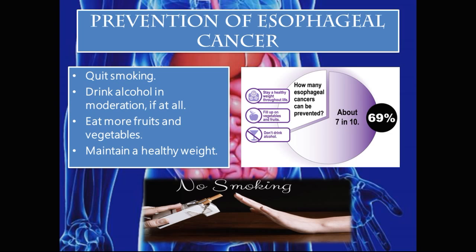Prevention is always better than cure. Preventative measures to reduce the risk of esophageal cancer include quitting smoking, drinking alcohol in moderation if at all, eating more fruits and vegetables, and maintaining a healthy body weight. Maintaining an active and healthy lifestyle is absolutely essential in the prevention of esophageal cancer. It is said that 69% — or 7 in every 10 persons — can actually prevent the development of esophageal cancer by making smarter health choices.